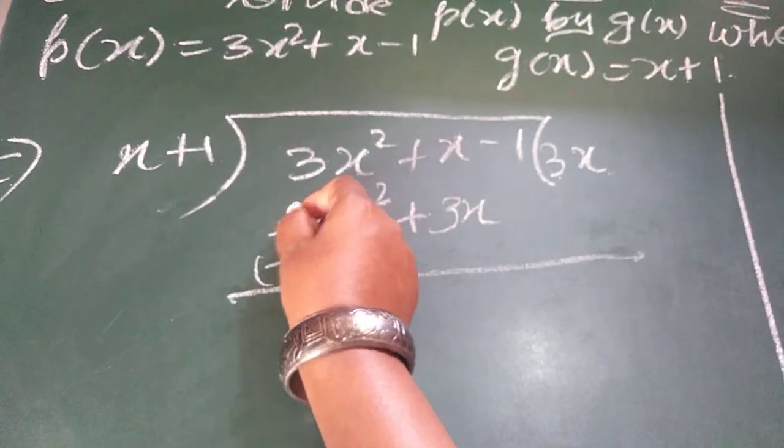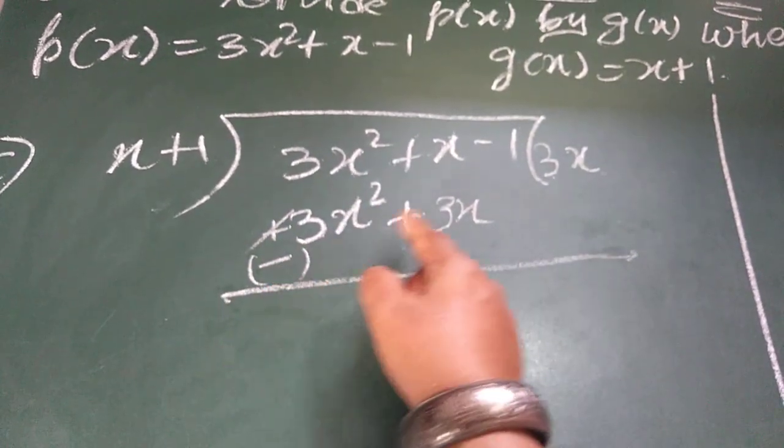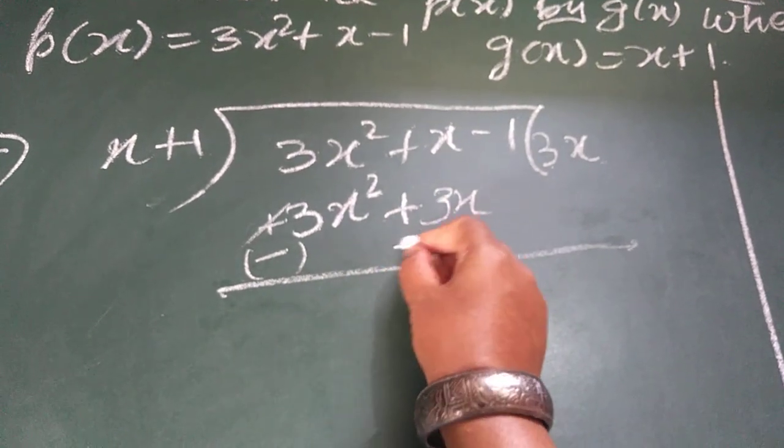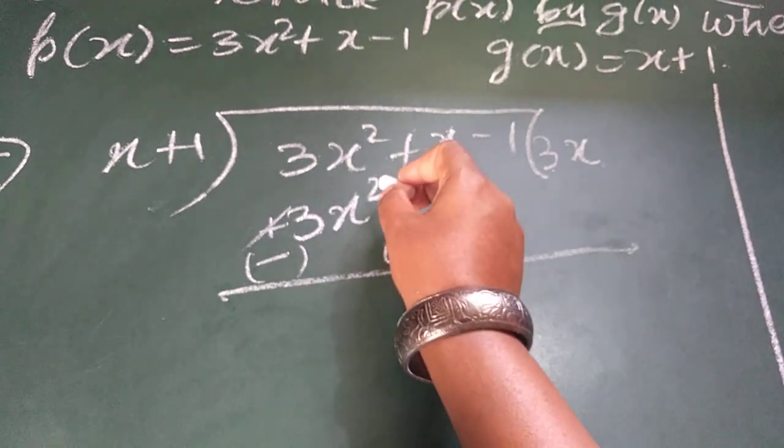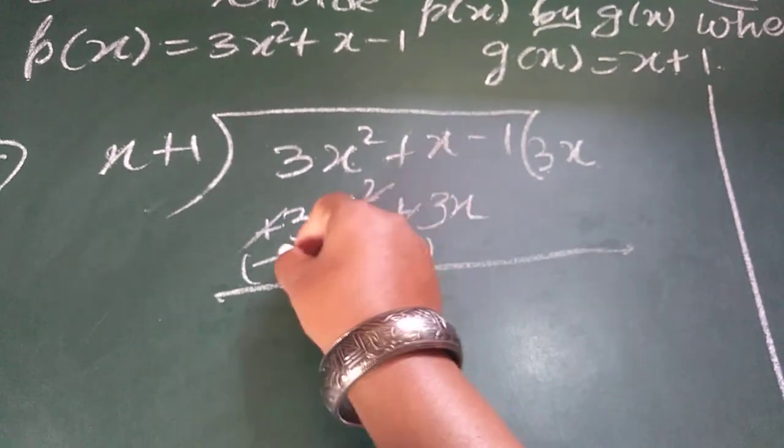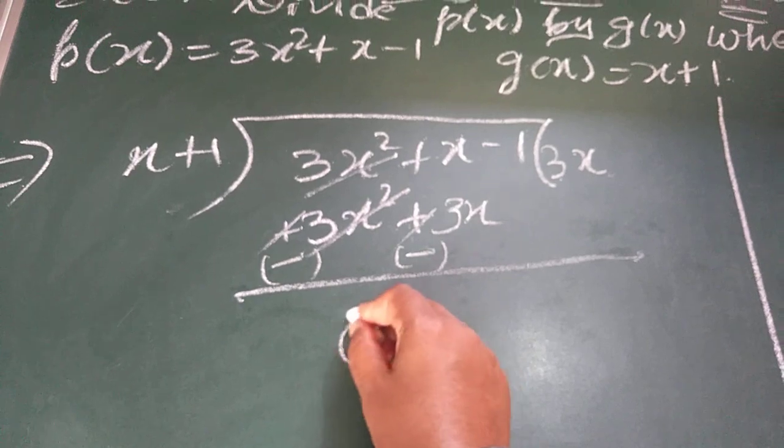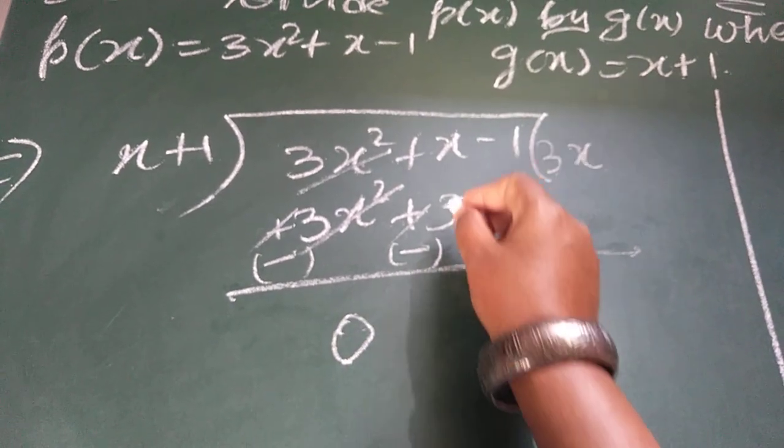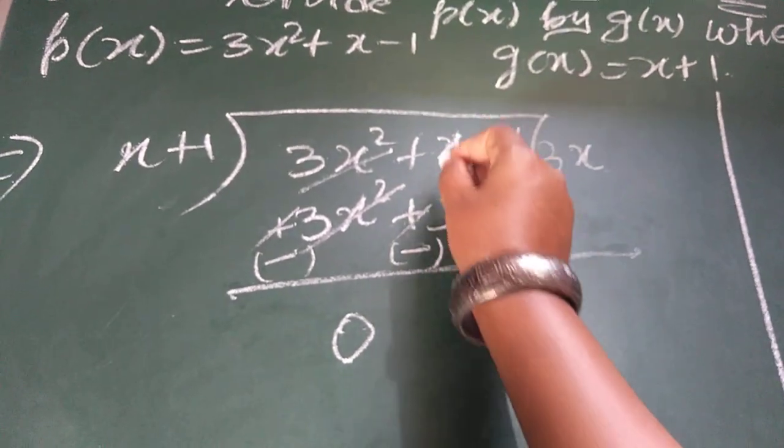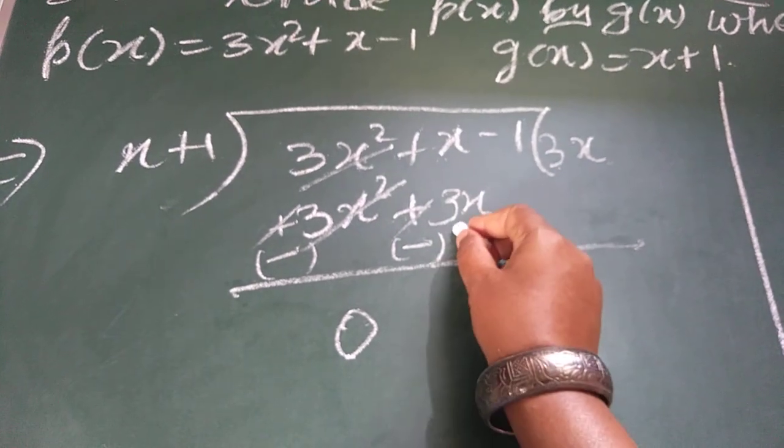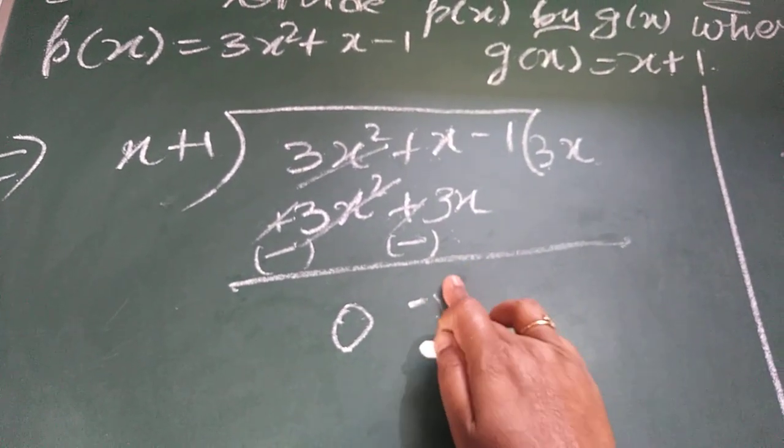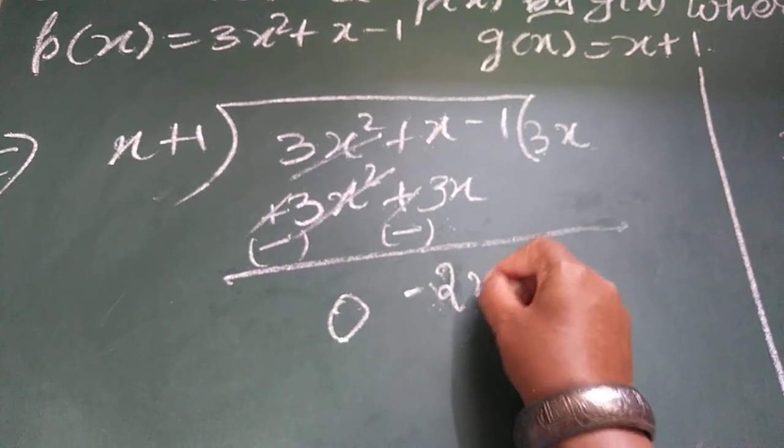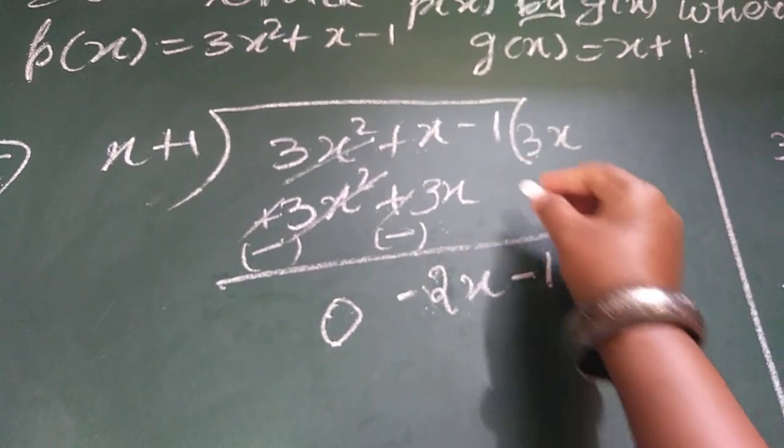Here, already plus is there. That became minus. Here plus is there, this becomes minus, because we need to subtract, children. These two are same with opposite symbols. Hence it got cancelled. Answer is 0. This is 3x and here is 1x. 3 minus 1 is 2, but greater number is for 3. Hence, minus 2x and bring down minus 1 here.